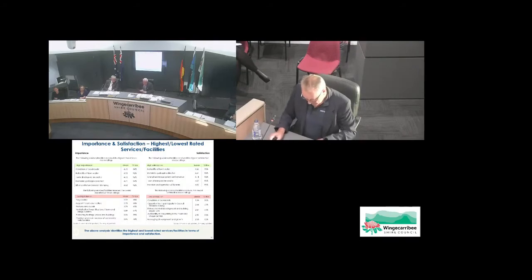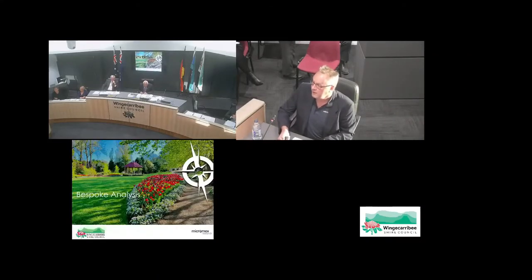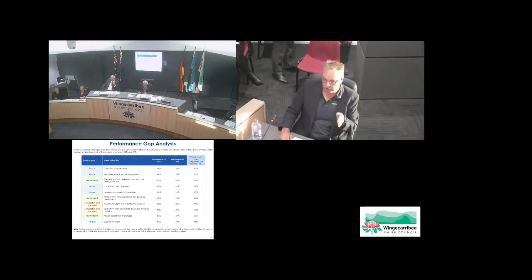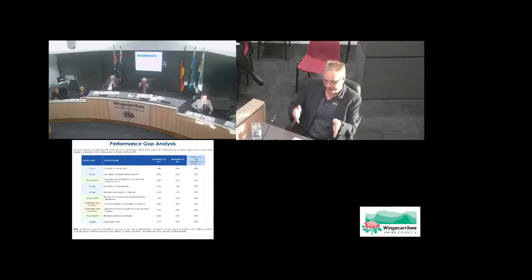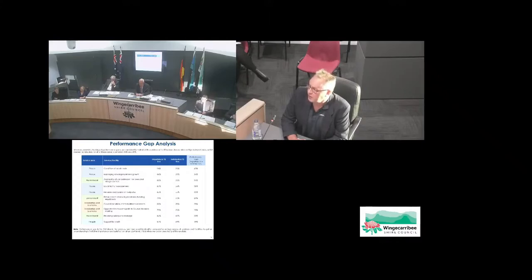This is called performance gap analysis. I've simplified it to show the top ten gaps. We always expect a gap between what's important and satisfaction — there's always a difference between the ideal and the experience — but the size of the gap matters. The biggest gap occurs with roads: 94% say it's important but only 31% are at least moderately satisfied. Development, car parking, local transport, traffic management, footpaths, development information, community engagement, drainage, and youth services round out the top gaps. Anything over 25% gap is an area worth exploring.